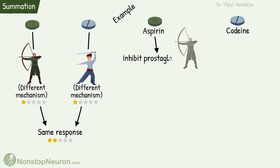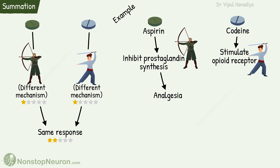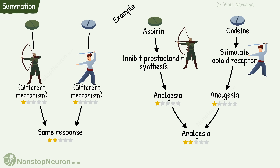Aspirin inhibits prostaglandin synthesis and thereby produces analgesia, and codeine stimulates opioid receptors, which also produces analgesia. Their combined effect is equal to the algebraic sum of individual effects. Thus both drugs act by different mechanisms but produce the same effect, and the combined effect is the sum of their individual effects. This is called summation.